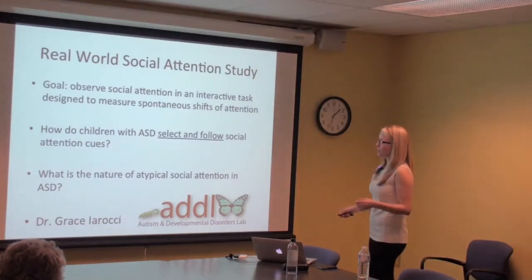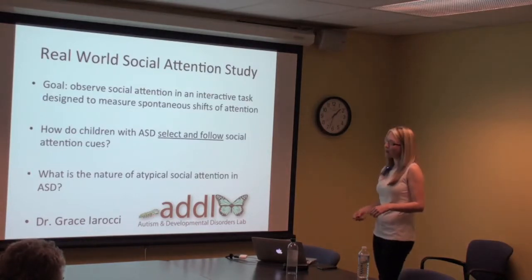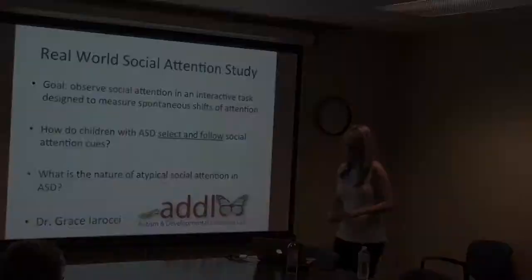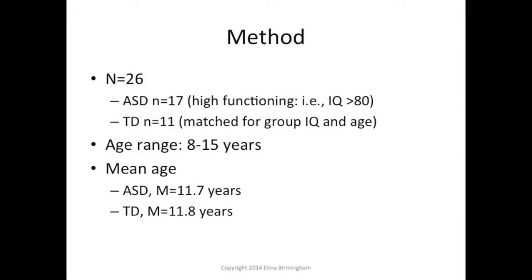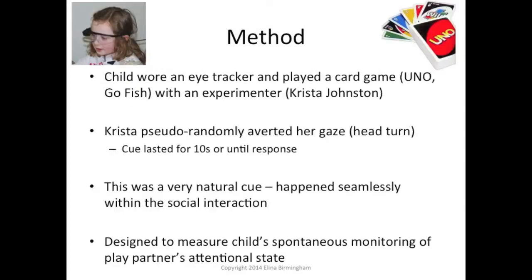This is research in collaboration with Dr. Grace Irochi at the ADDL at SFU. So far we have 26 participants — we're still collecting data. We have 17 participants with high-functioning ASD, meaning IQ over 80, and 11 typically developing children matched for group-level IQ and age. Participants are 8 to 15 years old, with mean ages of 11.7 for the autism group and 11.8 for the typical group.